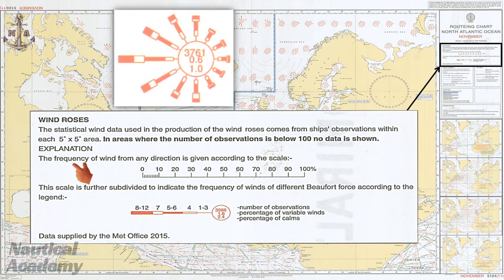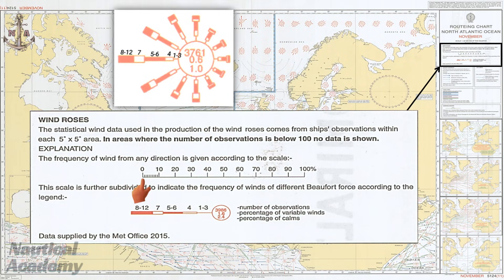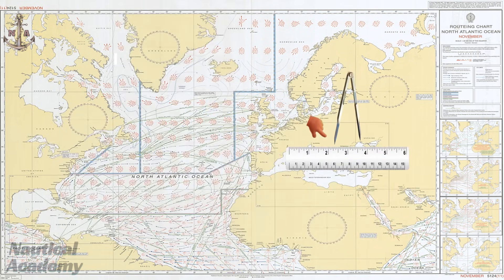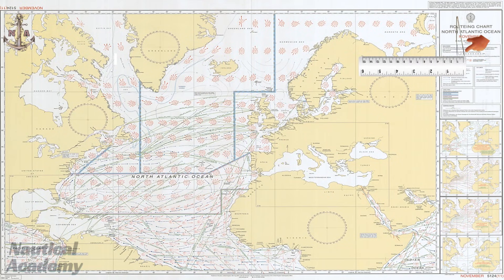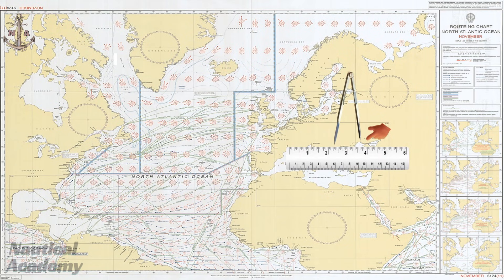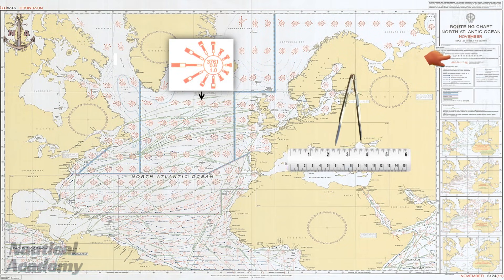To determine how frequently each wind force occurs — whether force 8 to 12, force 7, force 5 to 6, or any other Beaufort force — we simply refer to the frequency scale provided on the chart. The frequency of the wind is expressed as a percentage ranging from 0 to 100%. This scale can be applied to any wind direction on the chart. We can use a compass divider or ruler to measure the length of a specific segment, transfer it to the frequency scale, and read the corresponding percentage.